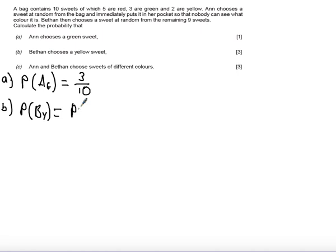So we can either have that Anne chooses yellow and Bethan chooses yellow, or Anne chooses a non-yellow and Bethan chooses yellow.